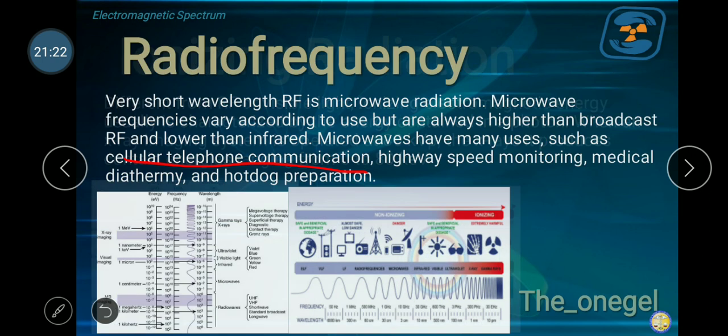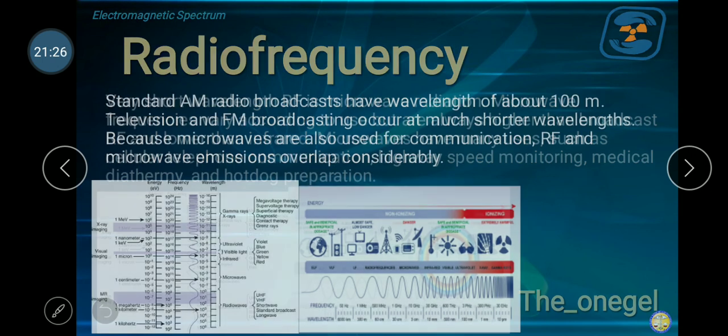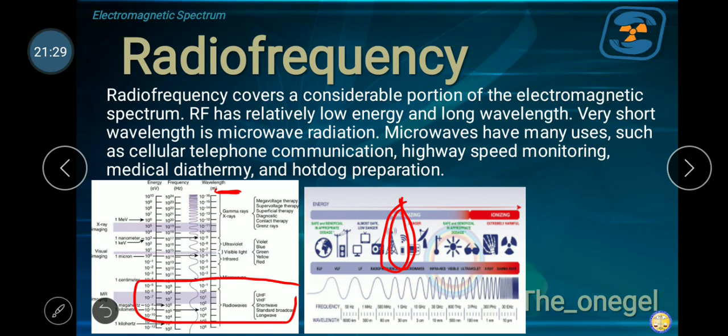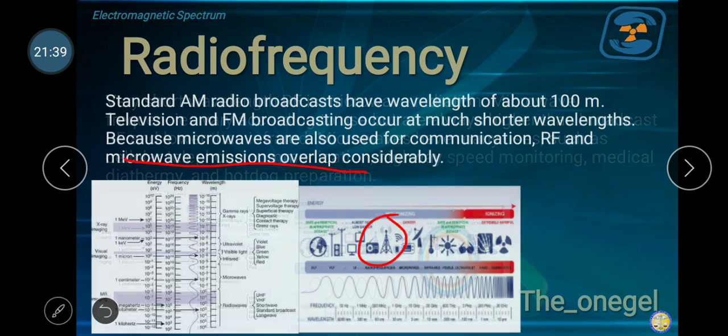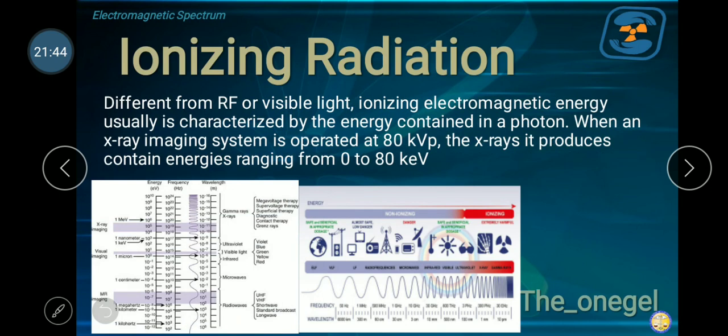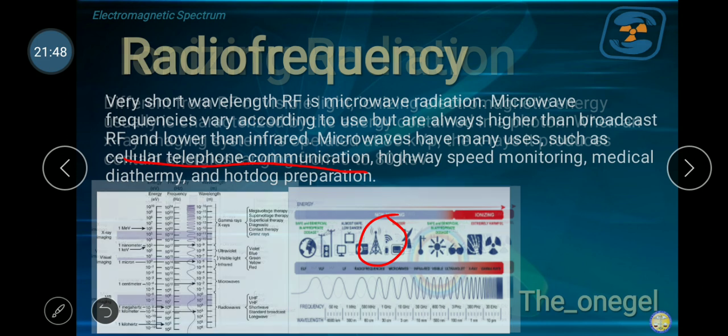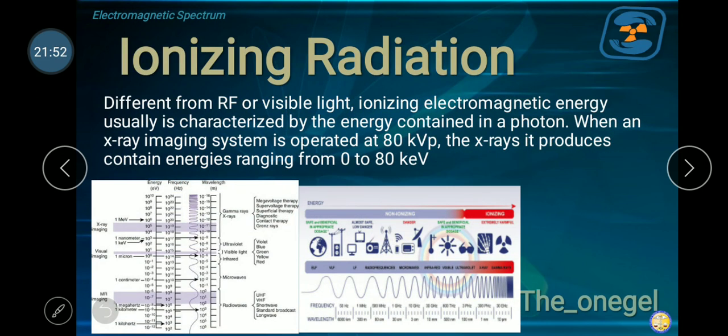Let's go back. This means there is also radiation here. In visible light, there is also radiation. Radiation definitely is everywhere. Different from RF or visible light, we are now at ionizing radiation. Ionizing radiation. The particulate radiation and electromagnetic radiation we mentioned are categorized under ionizing radiation. Different from RF or radio frequency or visible light, ionizing electromagnetic energy usually is characterized by the energy contained in a photon, or in a quantum, or in electromagnetic energy. These are energy disturbances in space. They are not particle.